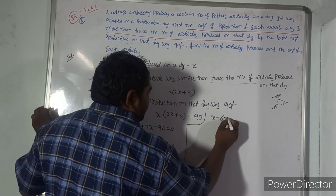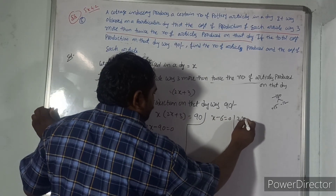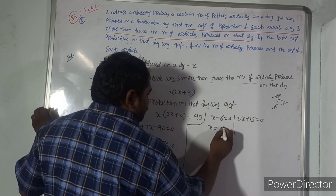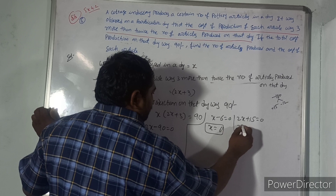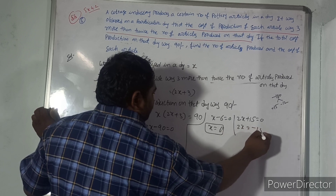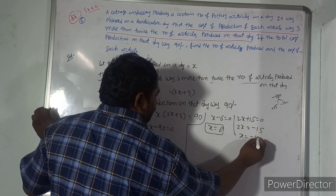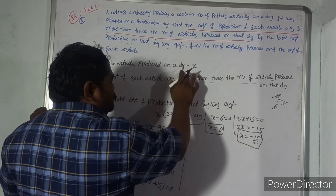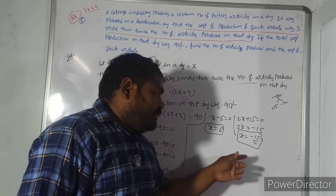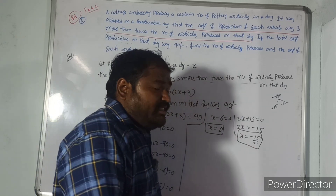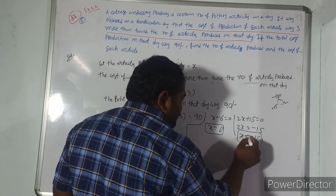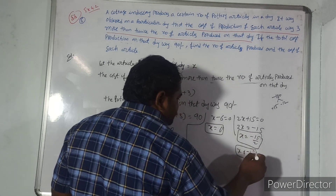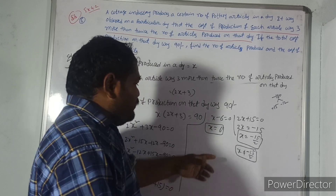Therefore, x minus 6 equal to 0, giving x equal to 6. And 2x plus 15 equal to 0, giving x equal to minus 15 by 2. Since x is not equal to minus 15 by 2 (as the number of articles cannot be negative), clearly x equals 6.